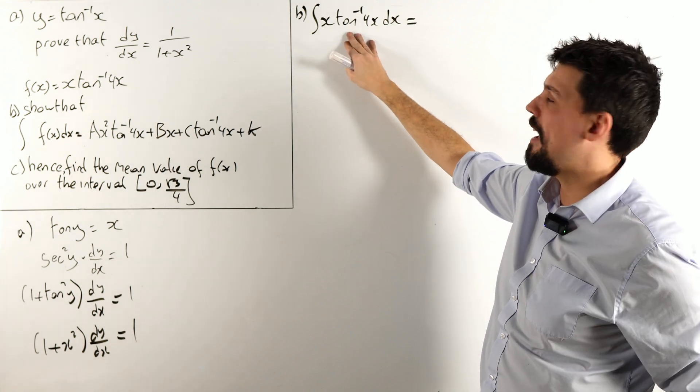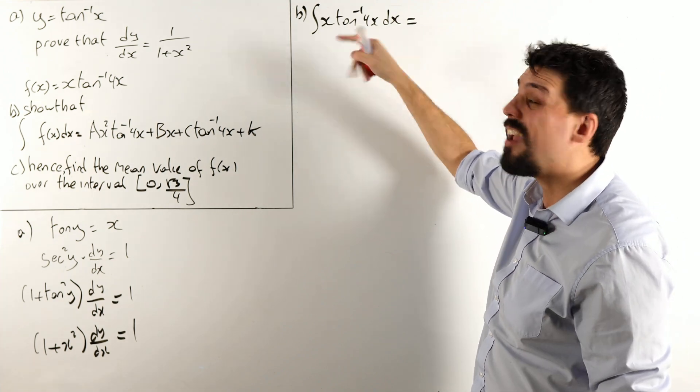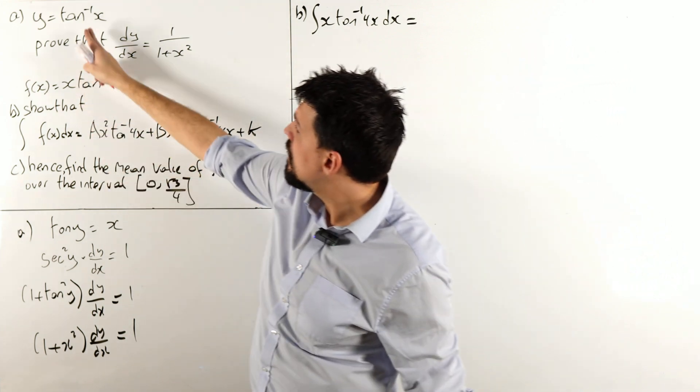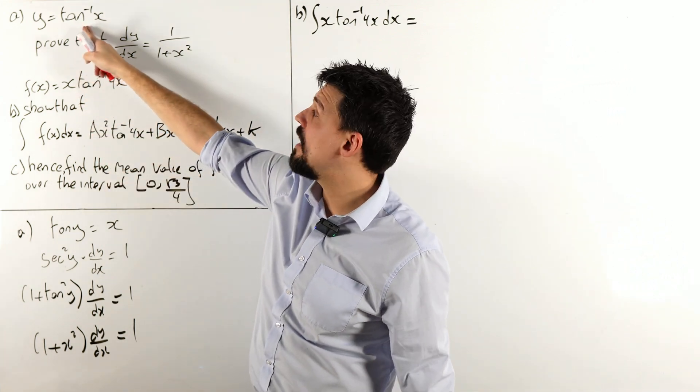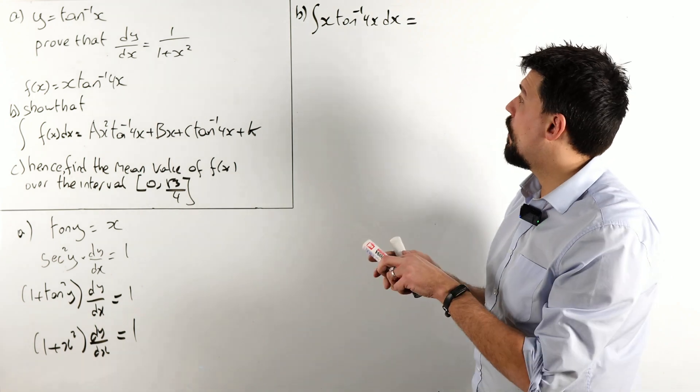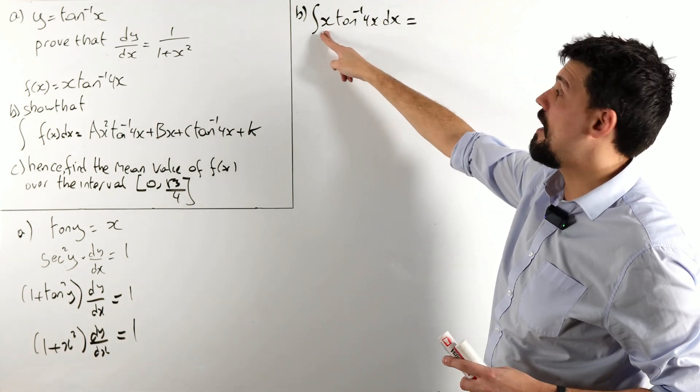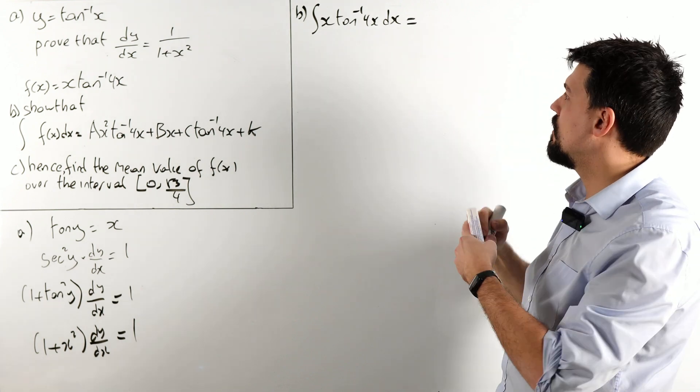Well, I'm not desperate to integrate tan minus 1 of 4x, I won't lie to you. However, in part A, we've learned how to differentiate it. So, let's do it the other way around.